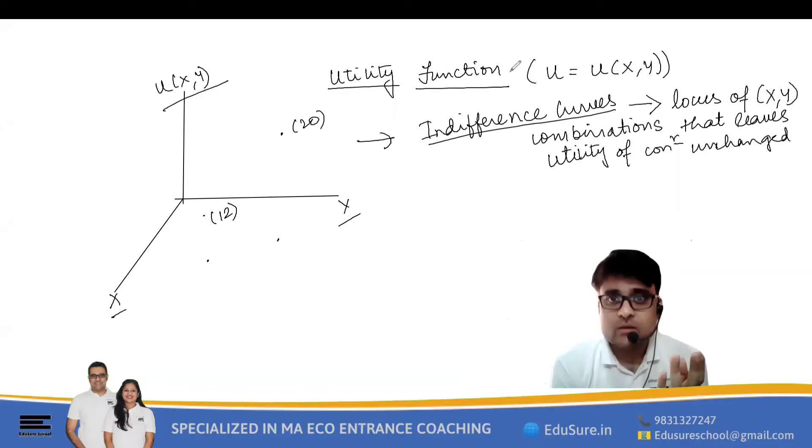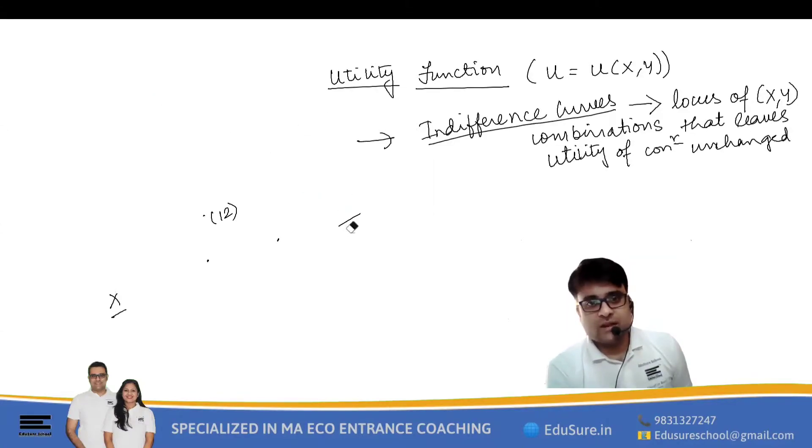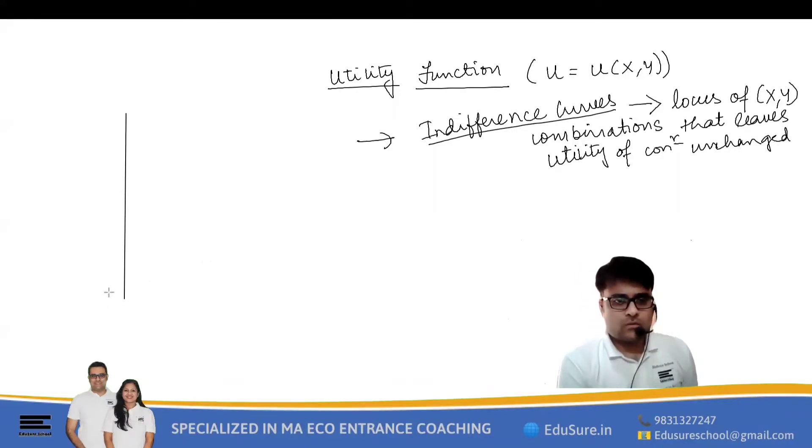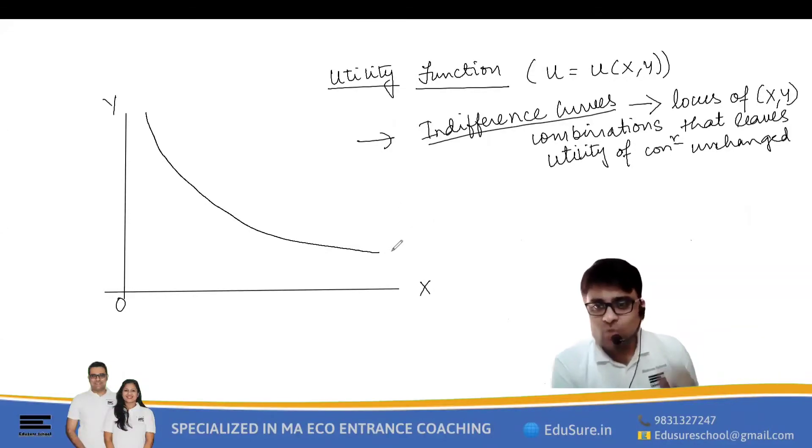Now what does this mean exactly? Let me draw it here. What this means exactly is something like this: in the XY space, find out all the combinations of x and y that leave the utility unchanged. So say I want to keep the utility fixed at a utility level of u bar. It can be any number—you can think about it as a utility of say 10. If I want to keep my utility value fixed at 10, I can definitely have different XY combinations that give me a utility of 10.